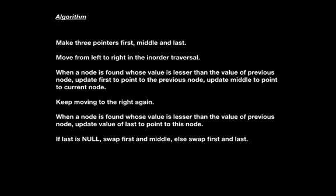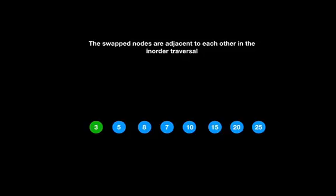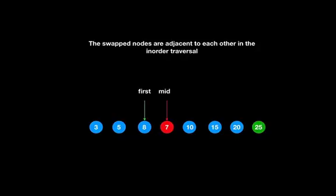Let us see an example where the swapped nodes are adjacent — 8 and 7 are swapped. Apply the algorithm: 5 is not lesser than 3, 8 is not lesser than 5, but 7 is lesser than 8, so update first to the node containing 8 and middle to the node containing 7. Continue: 10 is not lesser than 7, 15 is not lesser than 10, 20 is not lesser than 15, 25 is not lesser than 20. The value of last is never updated — it remains null. Since last is null, swap first and middle to obtain the result.